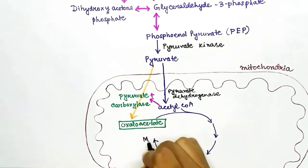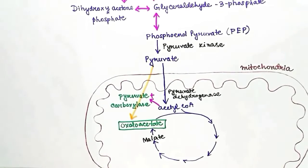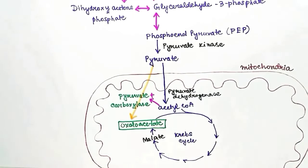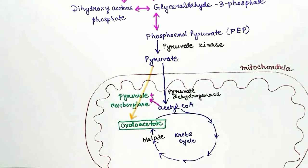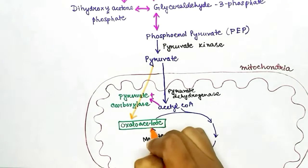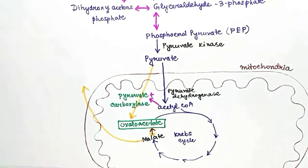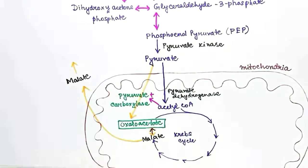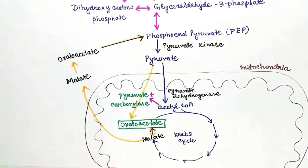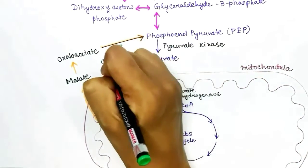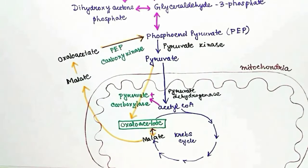If glucose level is low in the blood, we have to make glucose from pyruvate, but pyruvate cannot be converted to glucose directly. Pyruvate must first be converted to oxaloacetate by the enzyme pyruvate carboxylase. Oxaloacetate itself cannot leave the mitochondria, so it is first converted to malate, which leaves the mitochondria. In the cytosol, malate is converted back to oxaloacetate, which is then converted to phosphoenol pyruvate by the enzyme phosphoenol pyruvate carboxykinase.